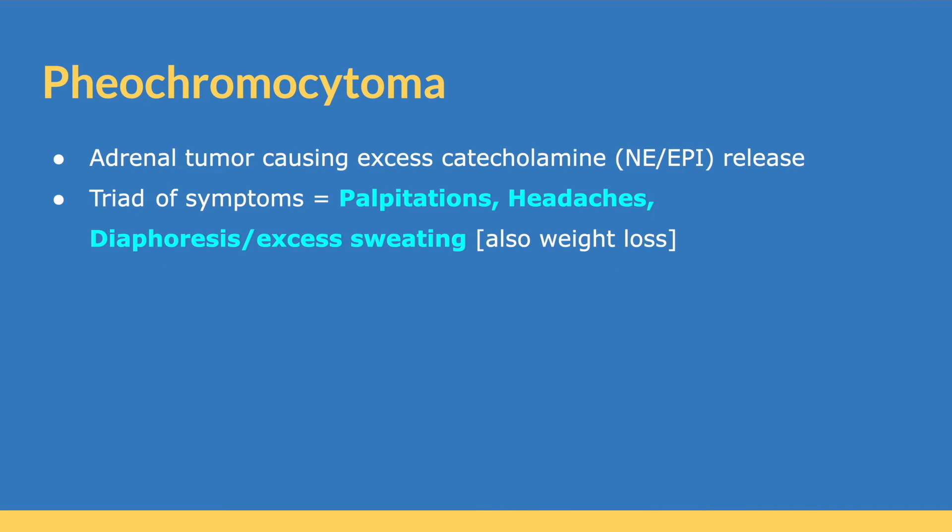Moving on to pheochromocytoma, this is an adrenal tumor that causes excess norepinephrine or epinephrine — general catecholamine release. Importantly, there is a triad of symptoms commonly seen with this condition, and these include palpitations, headaches, and diaphoresis. These patients will also show pretty visible weight loss.